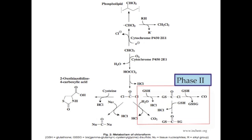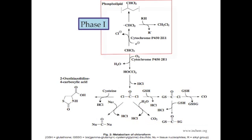A phase 2 glutathione conjugation reaction also converts phosgene to carbon monoxide. In the absence of oxygen, the reductive metabolism, also catalyzed by cytochrome P450-2E1, generates a dichloromethyl carbene-free radical.